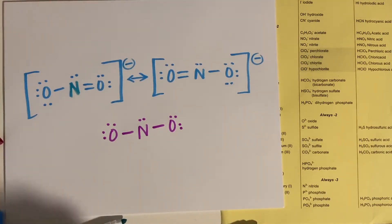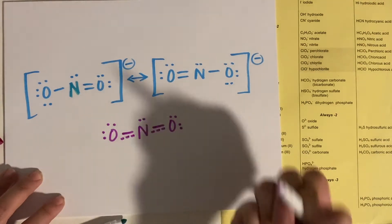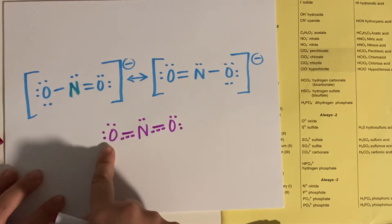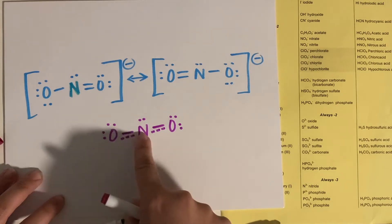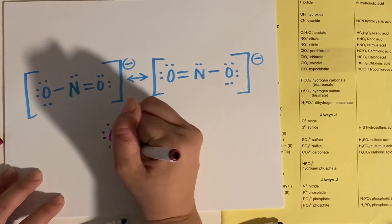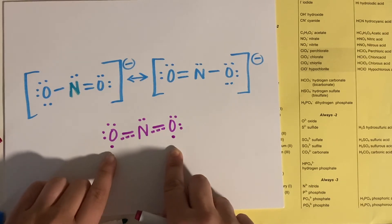Instead of showing either oxygen as having the double bond, it will give you this tricky little dashed line underneath, to show you that sometimes this oxygen on the left has the double bond, and sometimes this oxygen on the right has the double bond.